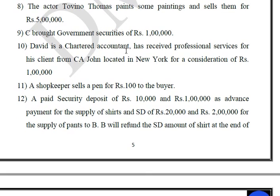David has received professional CA services from a CA firm located in New York for a consideration of Rs.1,00,000. In this case, David received the service for his business — in the course of furtherance of business. This is an import of services and is a supply.